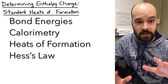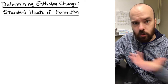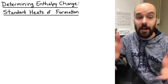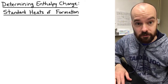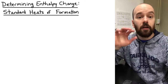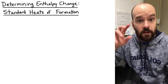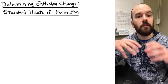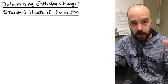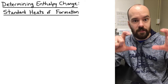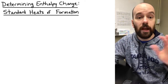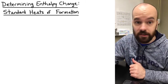The nice thing about standard heats of formation is all the data we need we can just look up online — it's available freely to anyone. I'm going to be using the standard enthalpies of formation table on Wikipedia. A similar table will be found in any AP chemistry textbook, and on the AP chemistry test itself the data would be provided in the question stem.